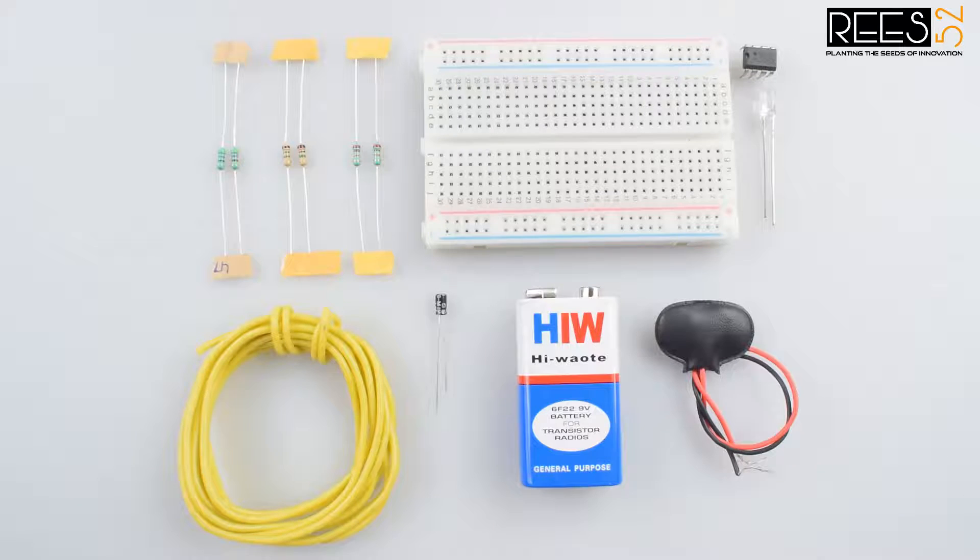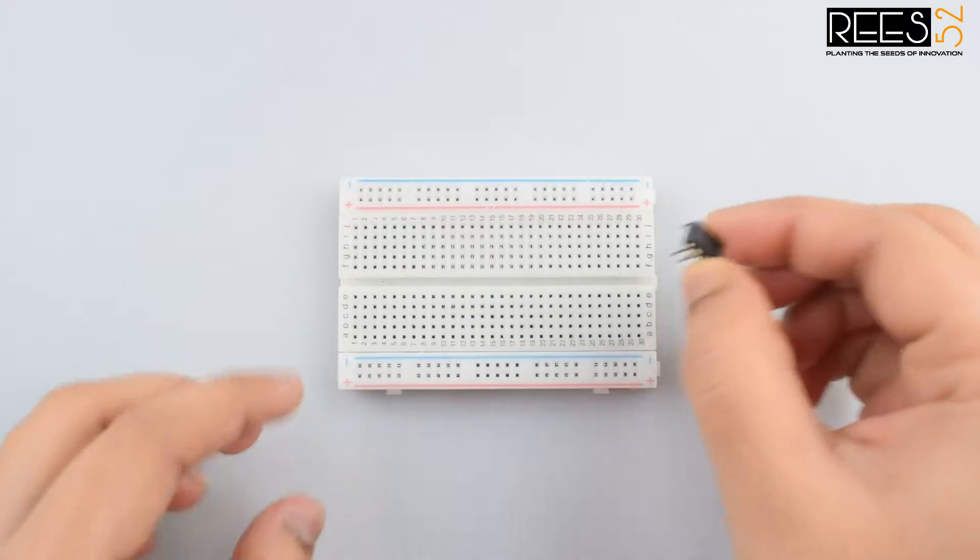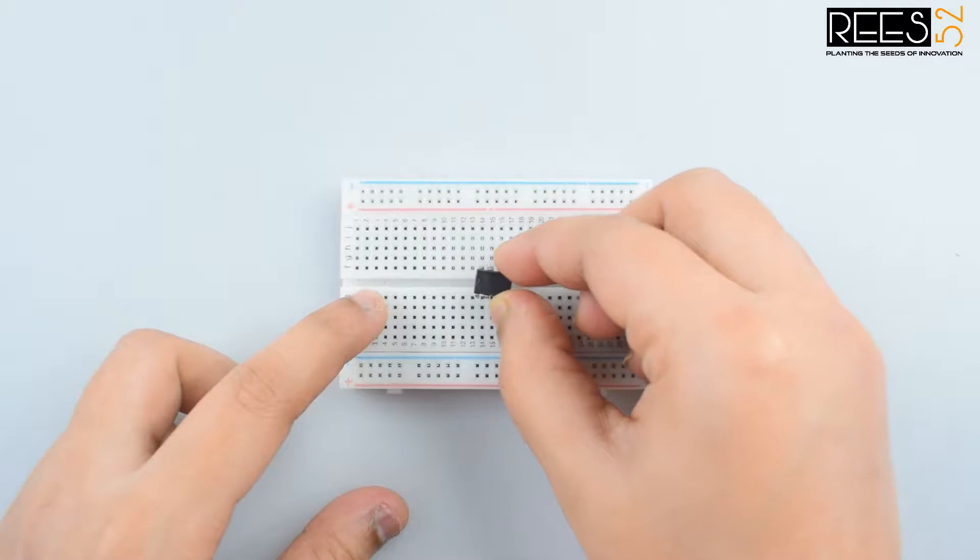You can purchase all these components from our website REES52.com, the link is given in the description. So let's start. First of all, attach the 555 timer IC to the breadboard.